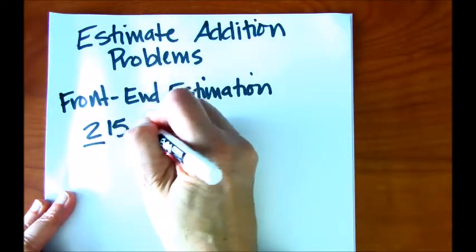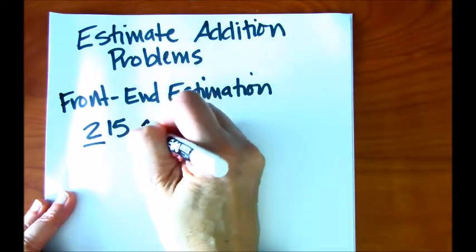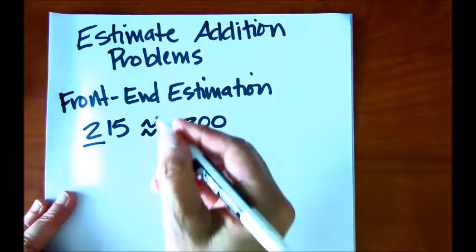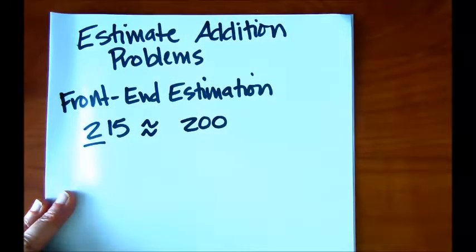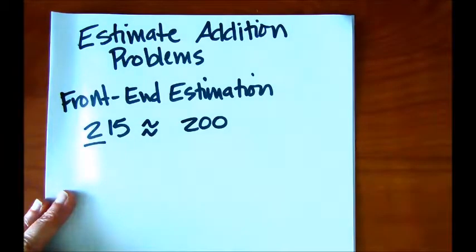Now, you might see this little squiggly — these two squiggly lines. That means approximately, or not exact.